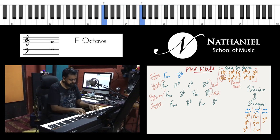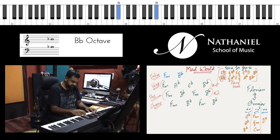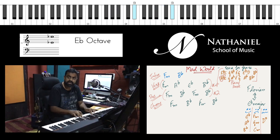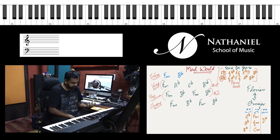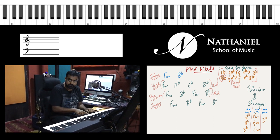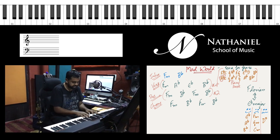E flat, F, G, A flat, B flat, C, D, E flat. And F dorian will be born from the F or the second note of the E flat scale.